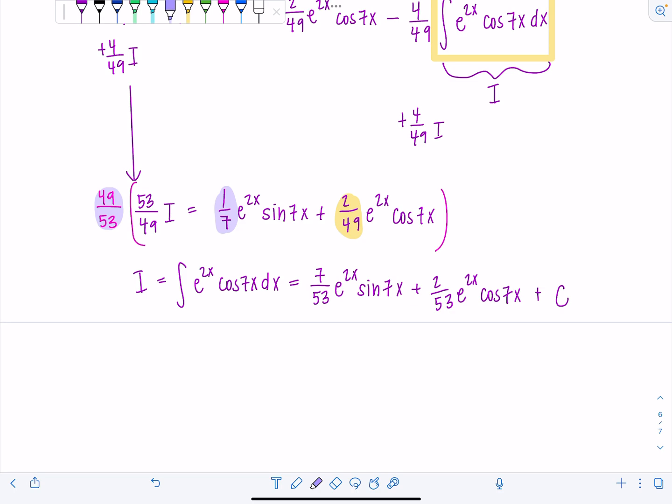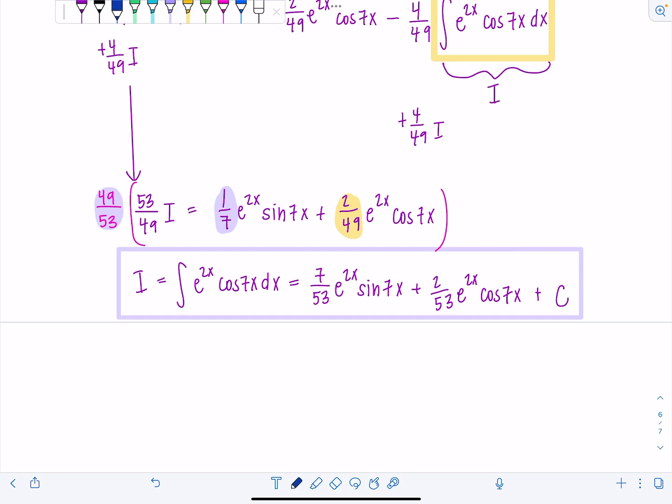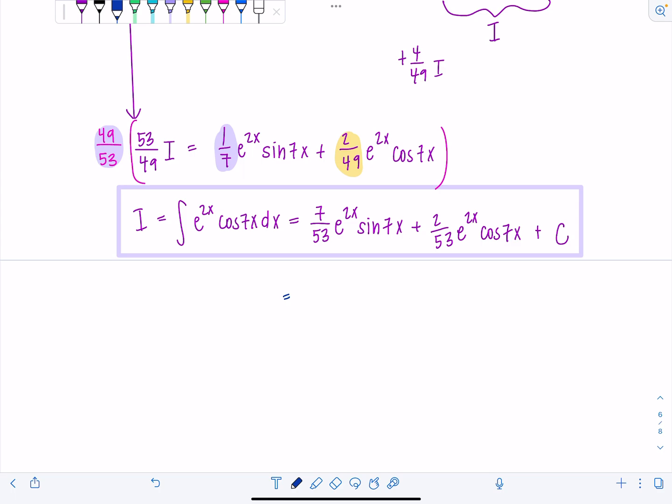You can leave it like this. I would be so happy if you were in my class and you made it this far. But we could factor and clean it up just a smidge if you were so inclined to perhaps take out a 1 over 53 and e to the 2x. 1 over 53 e to the 2x, and then you have 7 sine 7x plus 2 cosine 7x plus C. How do we feel about that? Let me just write it as e to the 2x over 53. I think that would look nicer. Tell me which one you like better, first or this second way with it factored out.